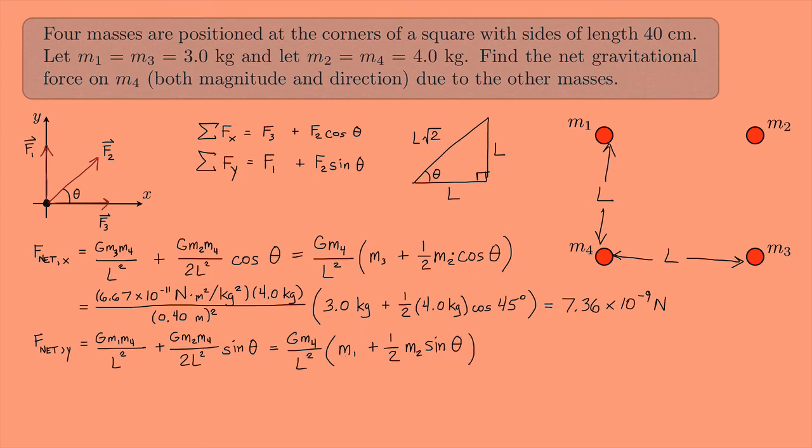But if you look at this, this looks a lot like this. The only difference is that instead of M3 here, I have an M1. But M1 and M3, they're both 3 kilograms. They're the same. And if you look at this here, the only difference is that instead of a cosine theta, I have a sine theta. But the sine of 45 and the cosine of 45 are the exact same number. So in this case, I'm going to get the same value, 7.36 times 10 to the negative 9 Newtons. And if you don't believe me, you can go ahead and try plugging it in on your calculator. But if you can recognize that you're going to get the same thing, it can save you a lot of work.